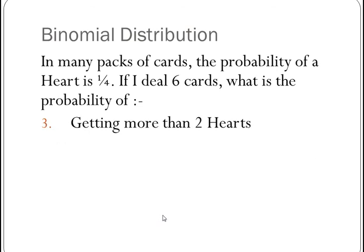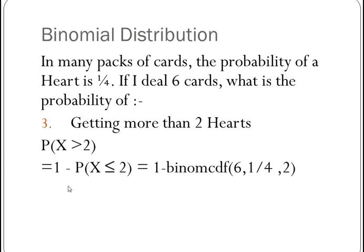So my last one is asking for the probability of getting more than 2 hearts. Now more than 2 hearts is x is greater than 2, but that doesn't include 2 hearts. So when I want to work out the opposite side, so I make it less than or equal to, I've got 1 minus, because that now gives me the bit I'm interested in, the probability of x is less than or equal to 2, because this did not include 2. So I'm going to do 1 minus the binomial CDF of 6, a quarter, and 2.